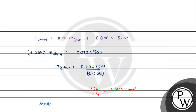Now we calculate the molarity. Molarity equals number of moles of solute divided by volume of solution, which is 2.3125 moles divided by 1 liter. So the molarity equals 2.3125 M. I hope you understood it well. Thank you and all the best.